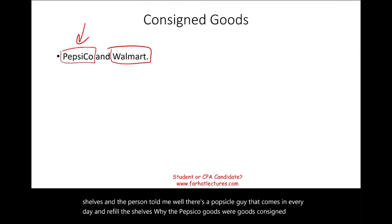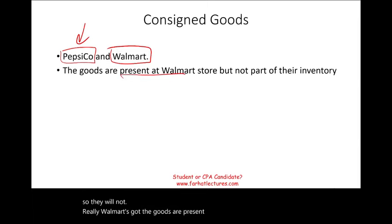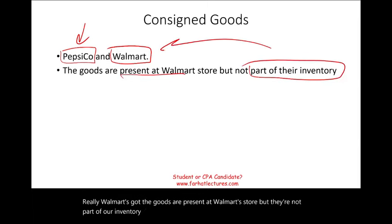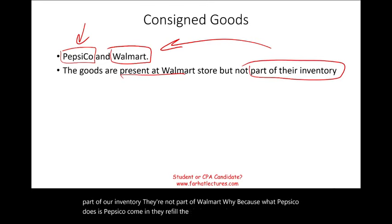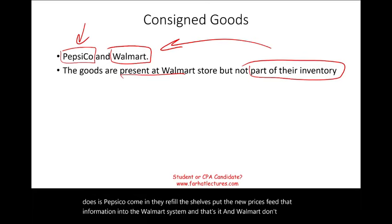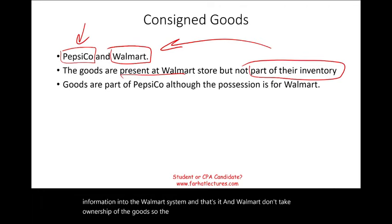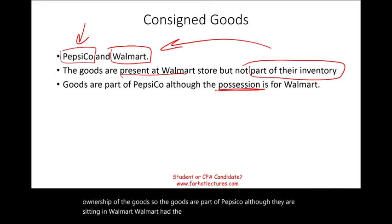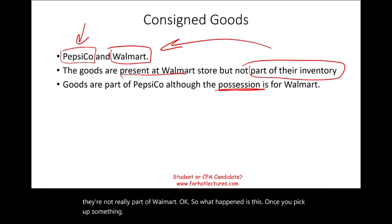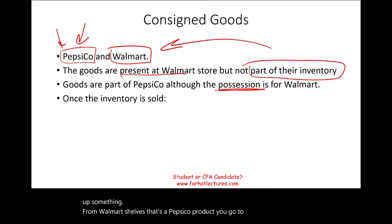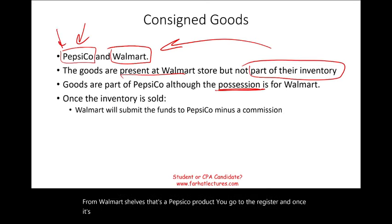The goods are present at Walmart's store, but they're not part of Walmart's inventory. PepsiCo comes in, refills the shelves, puts the new prices, feeds that information into the Walmart system — and Walmart does not take ownership of the goods. So the goods remain part of PepsiCo's inventory. Although they are sitting in Walmart, and Walmart has physical possession, they're not really part of Walmart's inventory.